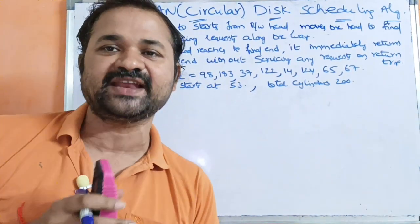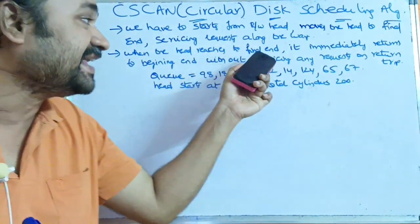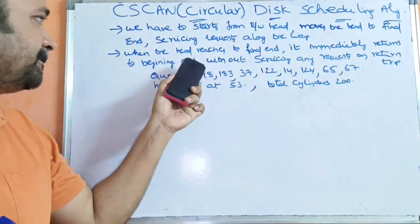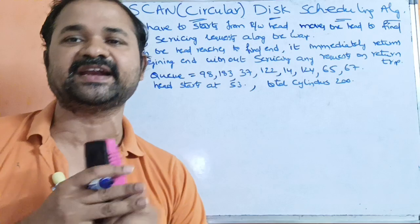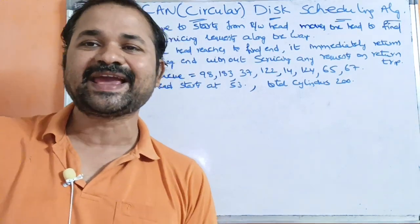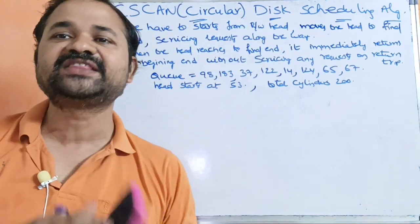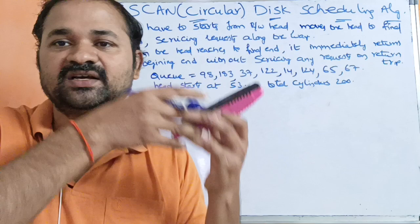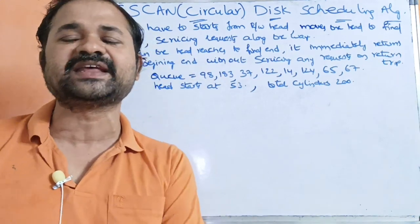After reaching the final end, the head immediately returns to the beginning end without servicing any request on the return trip. So after reaching the final end, we move back to the starting end without servicing any request. After reaching the starting end, we then serve the remaining requests.